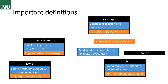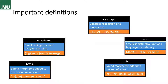And its counterpart is the suffix, which is a bound morpheme added to the end of a word, as in -er, -ing, -less, -able or -ible, and many others. And last but not least, we have the lexeme — the smallest distinctive unit of a language's vocabulary. Then we again have 'manage,' 'run,' 'do,' 'need,' and really any other word you can think of.